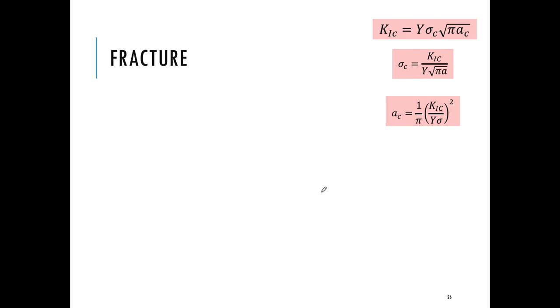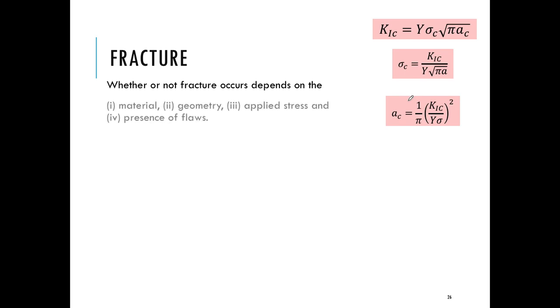That covers fracture toughness. From the stress intensity factor we can find the allowable stress for a component with a given flaw size, or we can find the critical flaw size given a required loading. Whether fracture occurs depends on the fracture toughness of the material, the geometry, the applied stress, and the presence of flaws.